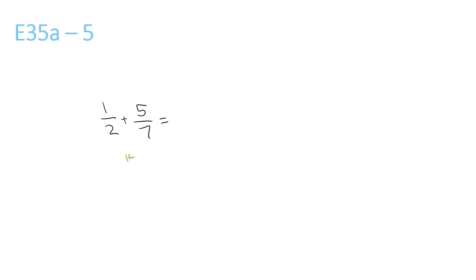2 and 7 both go into 14. 2 times 7 is 14, so we have to times the top by 7, so you get 7 over 14. Plus 7 times 2 is 14, so that means 5 times 2 is 10 over 14. 7 plus 10 is 17 over 14. Now since the top number is bigger than the bottom number, we have to make this a mixed number. So how many times does 14 go into 17? That's once, remainder 3 over 14.